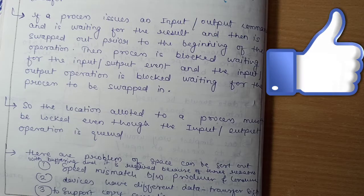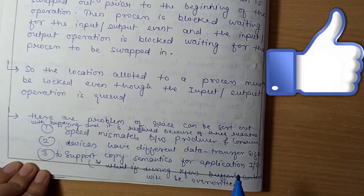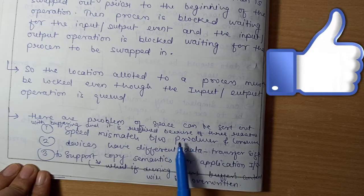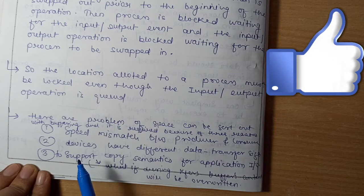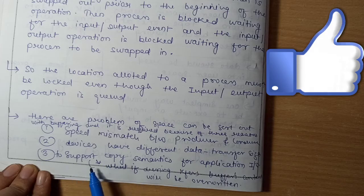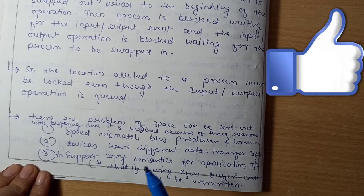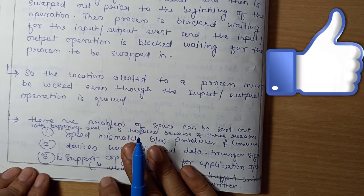The problems of space can be resolved with buffering. Buffering is required for three reasons: first, speed mismatch between producer and consumer — the producer is the IO device and the consumers are the user processes; second, devices have different data transfer sizes — every IO device has a different data transfer size; third, to support copy semantics for application IO. We need to ensure that if there is already data written in the buffer, it should be read before the next block of data is written by the device.